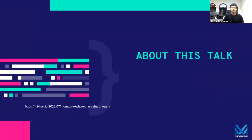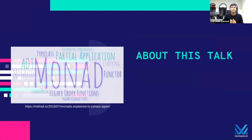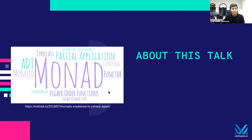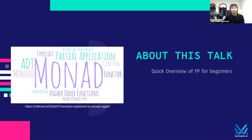When you first hear about functional programming on the web, it's all hype these days. You hear about words like monoids, monads, type classes, higher order functions, partial application, currying functions — and it's super confusing and super scary. This talk is really a quick overview of functional programming. It takes months, if not years, to master.